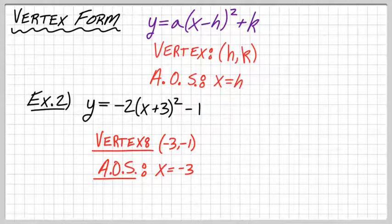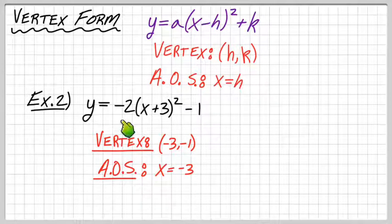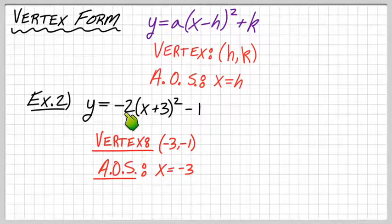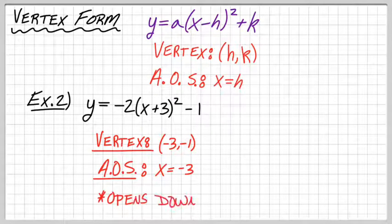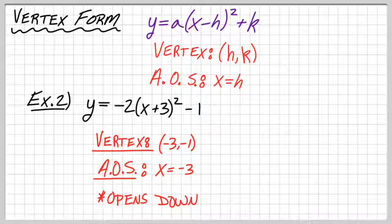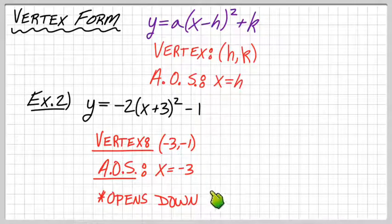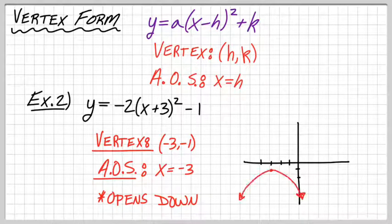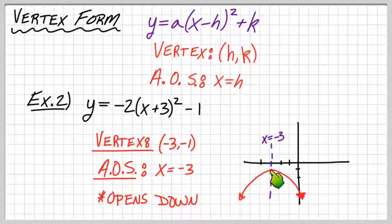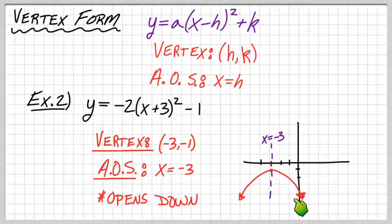One other thing you should be able to tell right now is whether it opens up or down. And the fact that this a value here, the number out front, a, is negative, it tells you it opens down. So, the third thing you know about this is that it opens down. So, we could actually make a rough sketch of this right now. If you know the vertex, it opens down. So, the vertex is at negative 3, negative 1. Opens down, and then, I just wanted to go ahead and just illustrate here x of symmetry. x equals negative 3. That's a vertical line that goes through negative 3. And that's also a line that cuts the thing perfectly in half. And that'll always be the x value from the vertex.